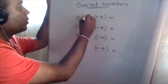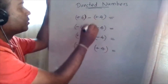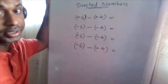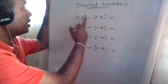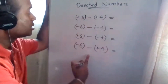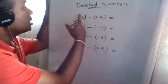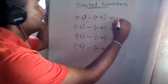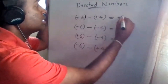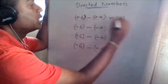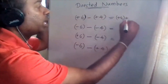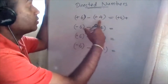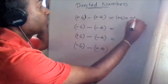When there are subtractions, what should we do? Positive six subtraction positive four — the subtraction should be converted into addition by taking the additive inverse of positive four, which is negative four.